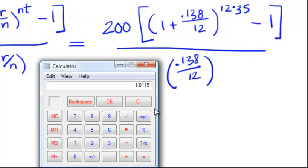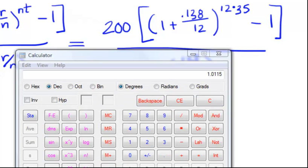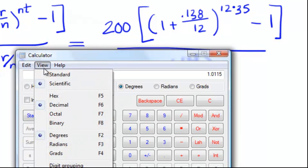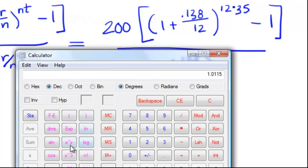Now I need to raise this to whatever 12 times 35 is. I changed my calculator view over here to scientific instead of standard so that I can use this exponent button. First I should figure out what is 12 times 35, and that value comes out to 420. So I'm going to raise this 1.0115 to the power of 420.